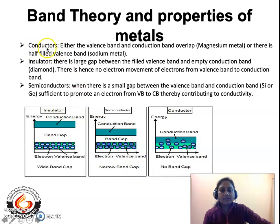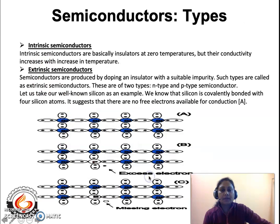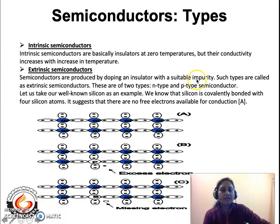There are three types: conductors, insulators, and semiconductors. Semiconductors are divided into two types: intrinsic semiconductors and extrinsic semiconductors. Intrinsic semiconductors are insulators at zero temperature, but their conductivity increases with increasing temperature. Extrinsic semiconductors are produced by doping an insulator with a suitable impurity. Depending on the type of impurity added, they are known as p-type or n-type, and these come under extrinsic semiconductors.